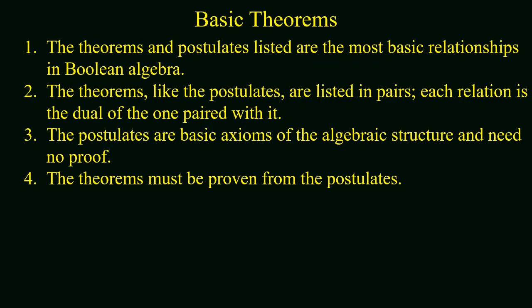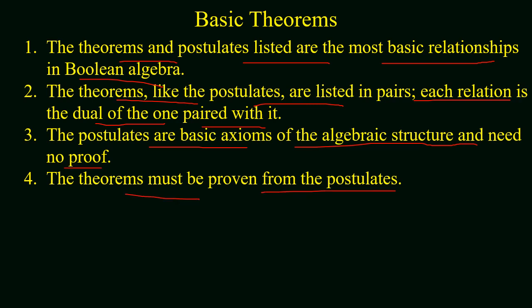The theorems and postulates listed in the table show the most basic relationships in Boolean algebra. The theorems, like the postulates, are listed in pairs, and each relation is the dual of the one paired with it. The postulates are basic axioms of the algebraic structure and require no proof, whereas the theorems must be proved using the postulates. We will now start proving the theorems.